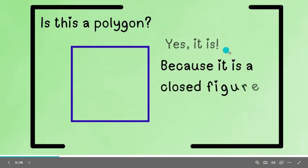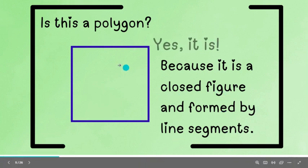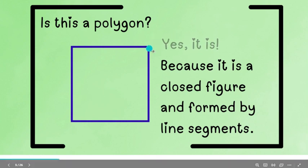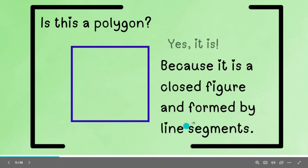Yes, it is because it is a closed figure and formed by line segments. Paano ba malaman na closed ang figure mo? So, kung ang dalawang line ay nag-meet siya sa common point. So let's say this line meets the other line at this point. And so on and so on, na-close nila yung shape na to. And so, we can say that this is a polygon.